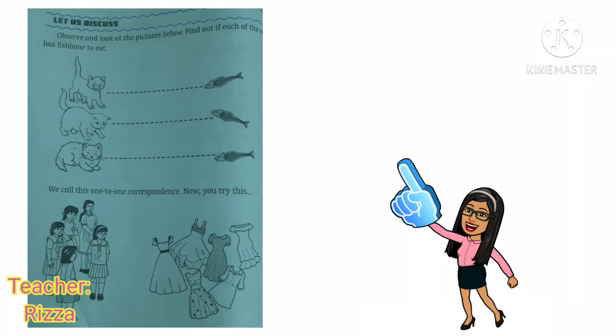Get your math book for our activity. Let us try answering page 104. Observe and look at the pictures below. Find out if each of the cats has fishbone to eat.